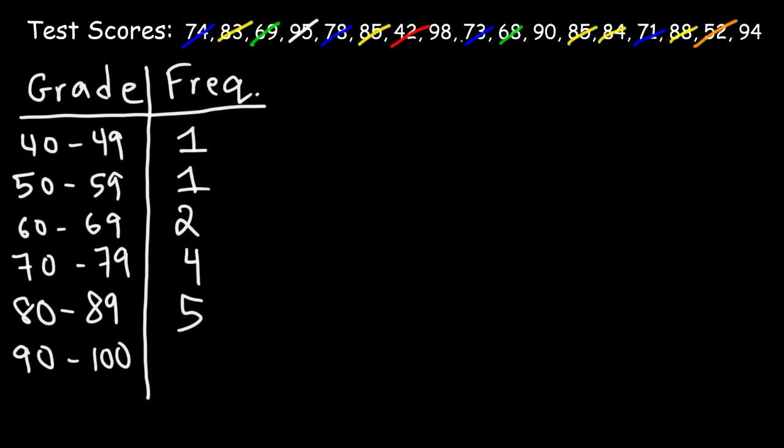And then finally, we have 1, 2, 3, 4 students who received an A or scored 90 or more. And so this is our frequency distribution table. Once we have that set up, now we can construct the histogram. The histogram looks like a bar graph, but the only difference is that the bars are attached to each other. There's no spaces between the bars.